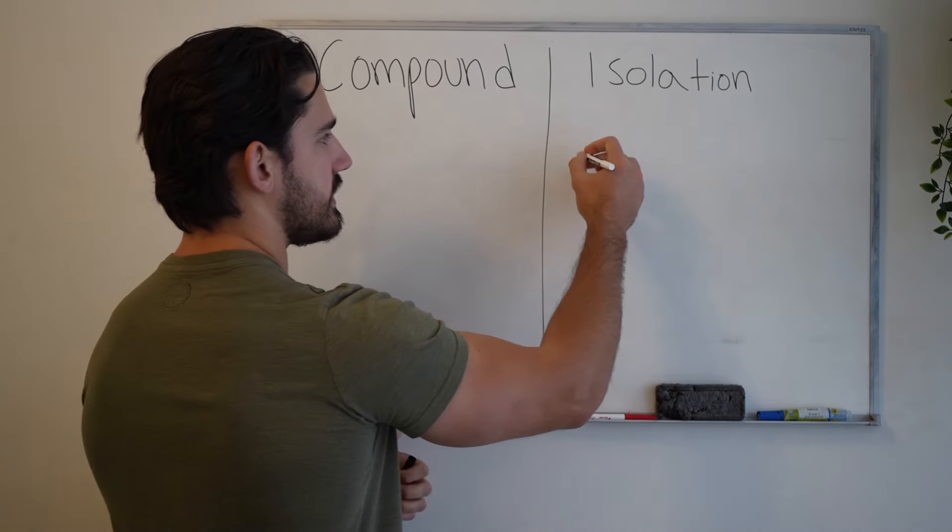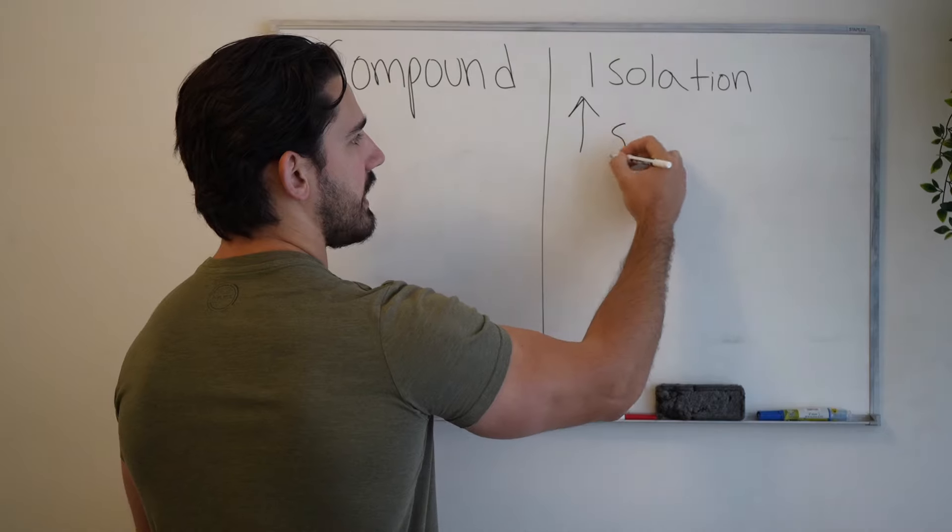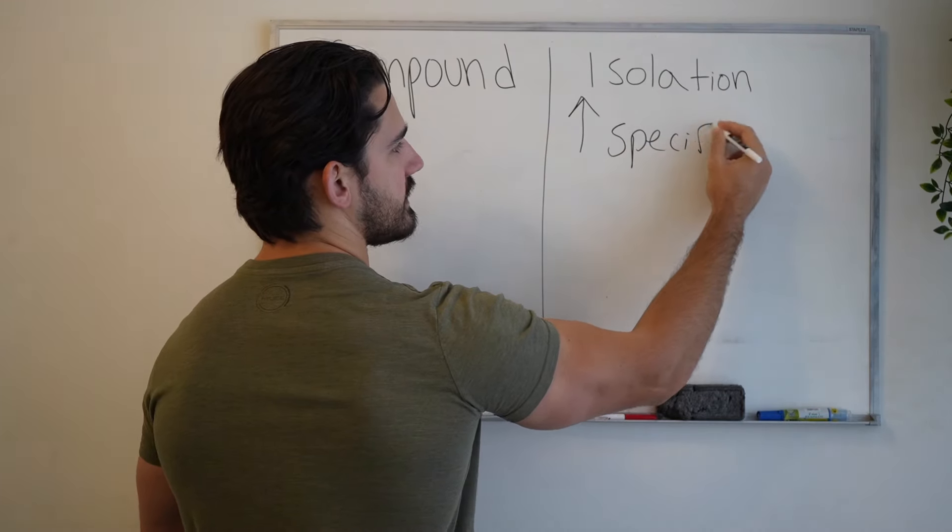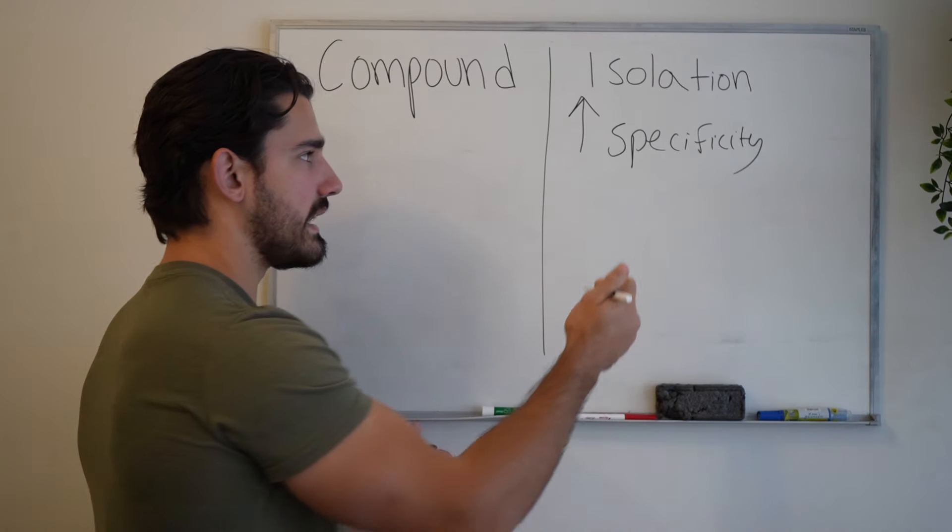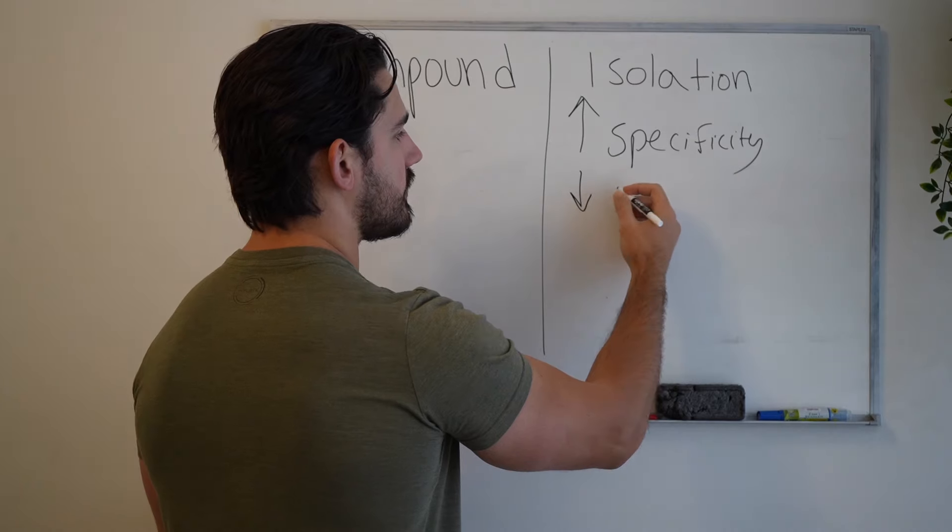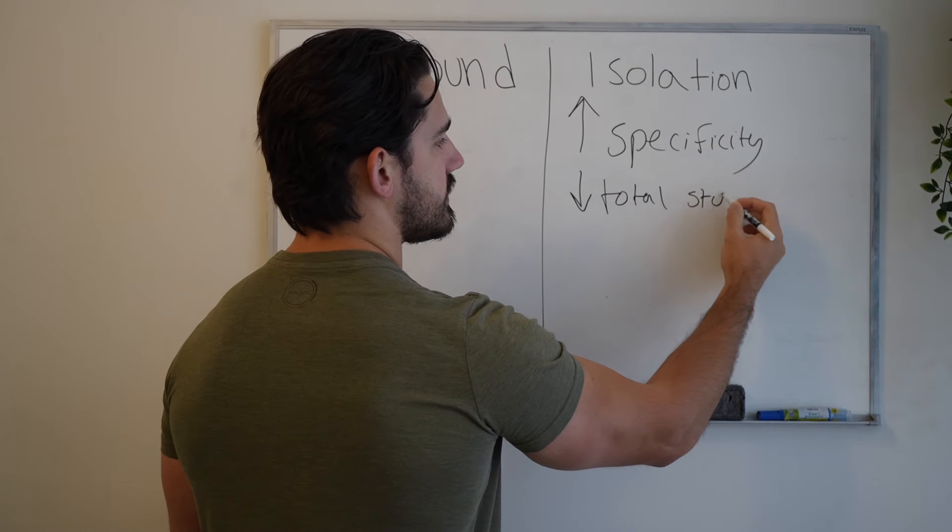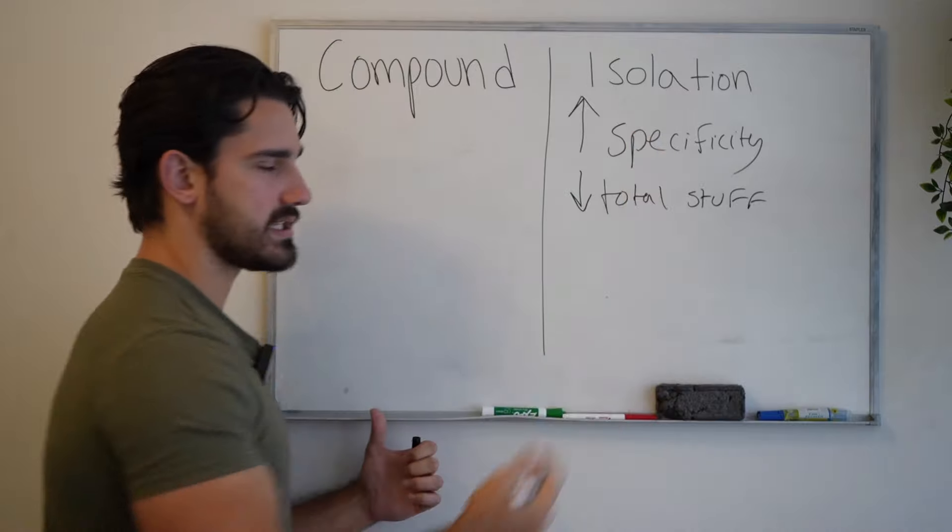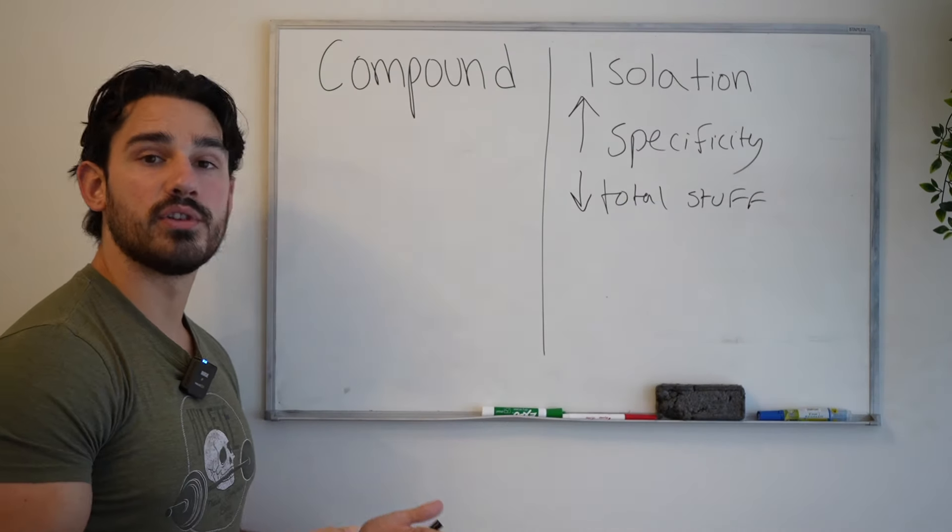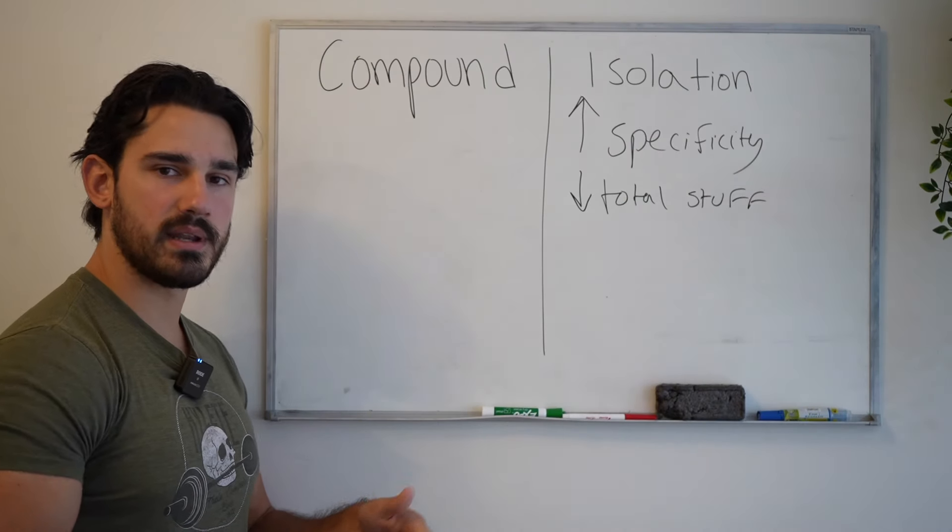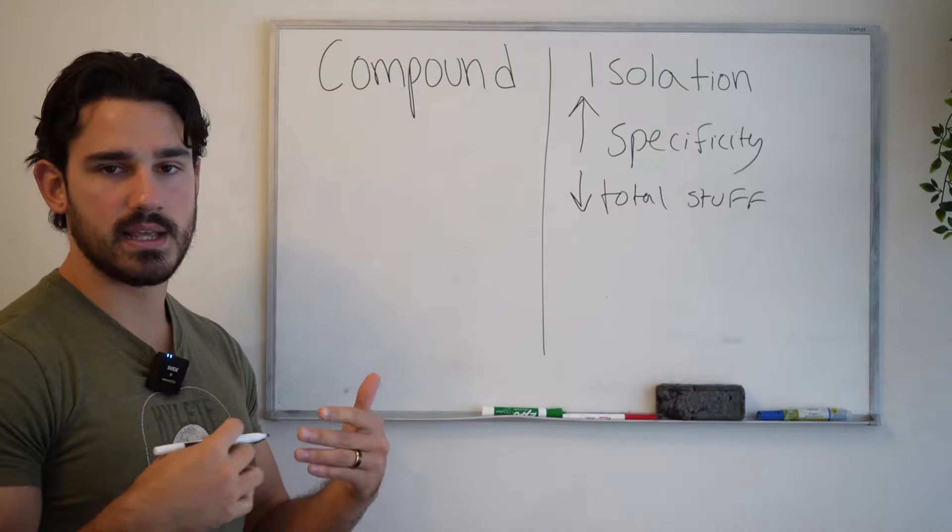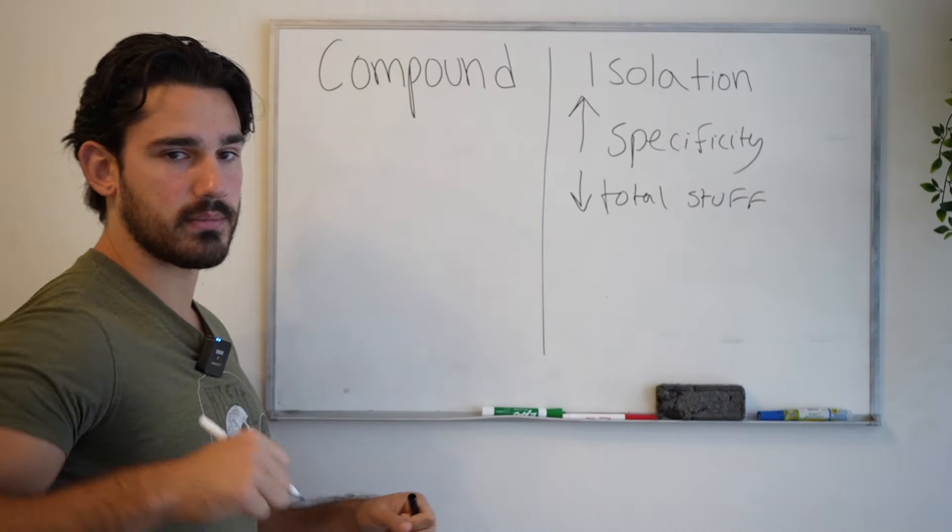So the first upside to isolation is we have an increased amount of specificity. But along with that benefit comes a decreased amount of total stuff stimulated. Meaning if I'm doing a triceps extension and I'm not doing a bench press, I am at that moment not also training my chest and my front delts and other muscles that do that.